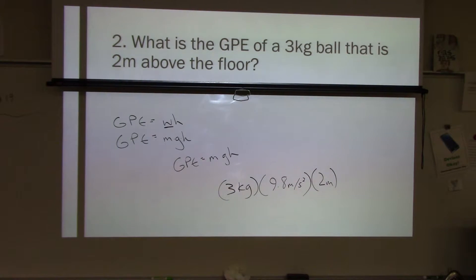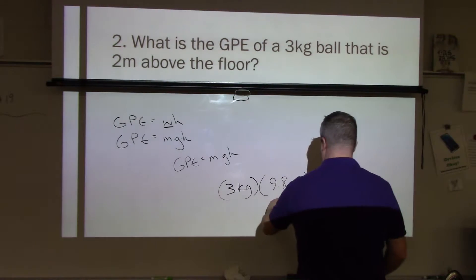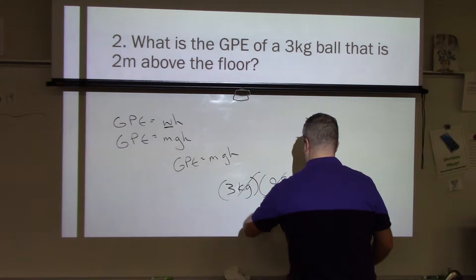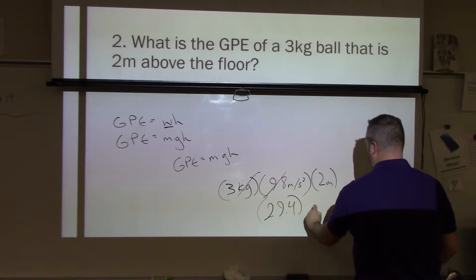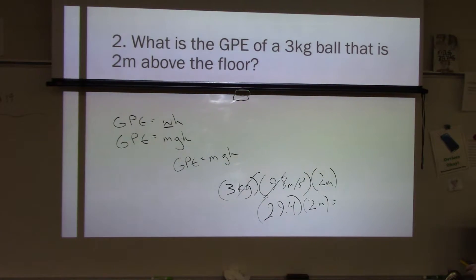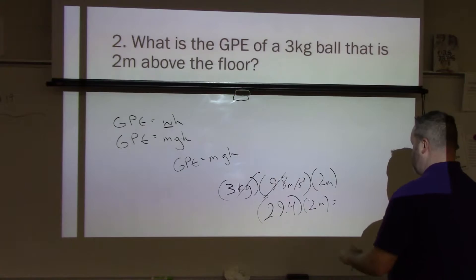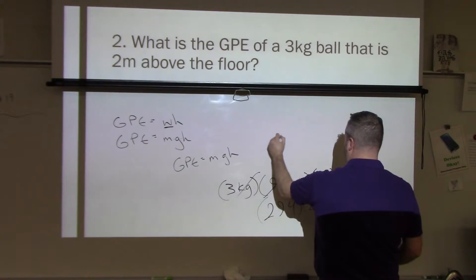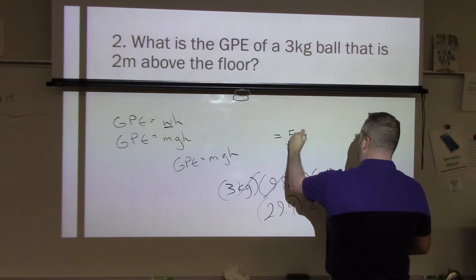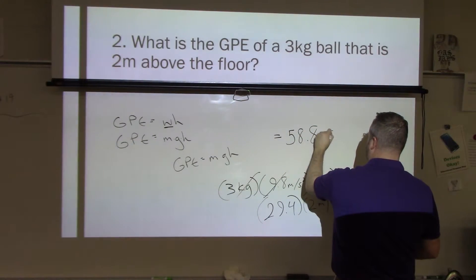So when I multiply three times 9.8, using my calculator, I get 29, so this is 29.4, and that's going to be multiplied by two meters. So 29.4 times two gives me 58.8. So 29.4 times two is going to equal 58.8 joules.